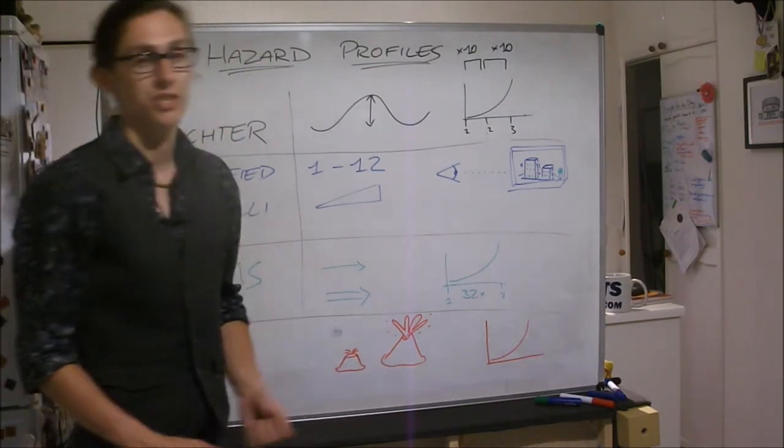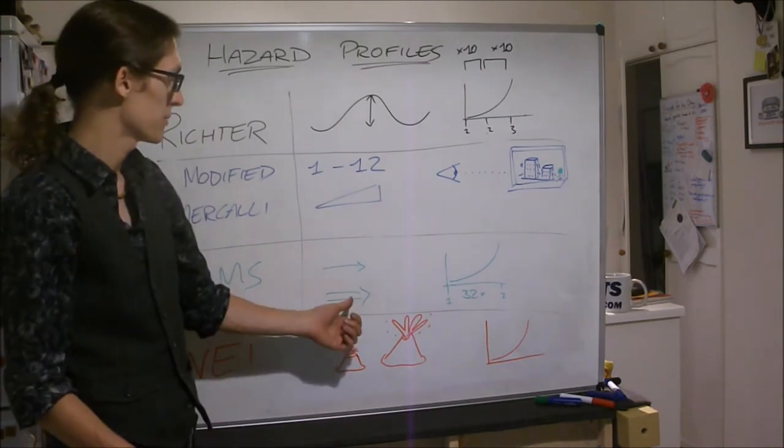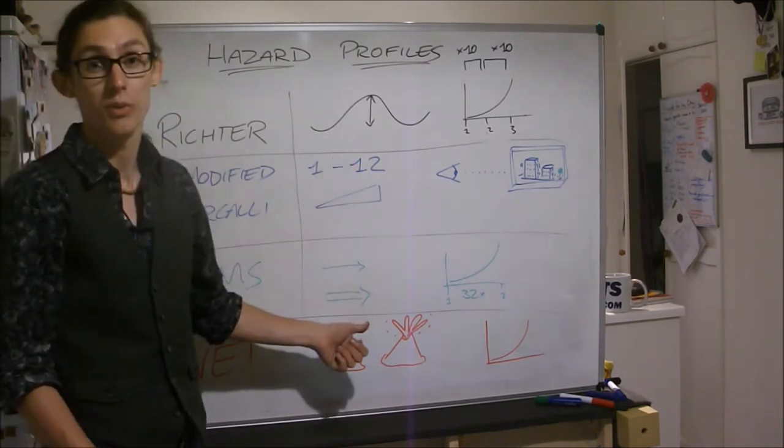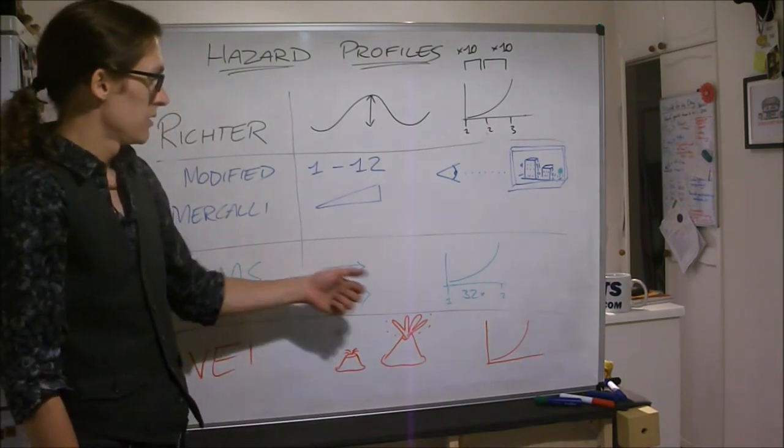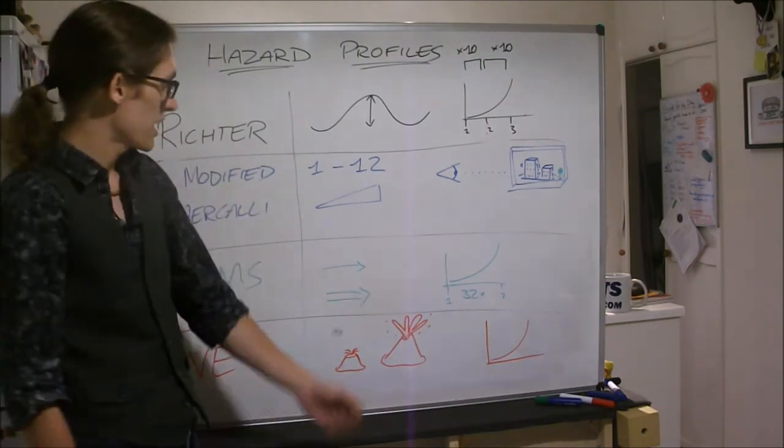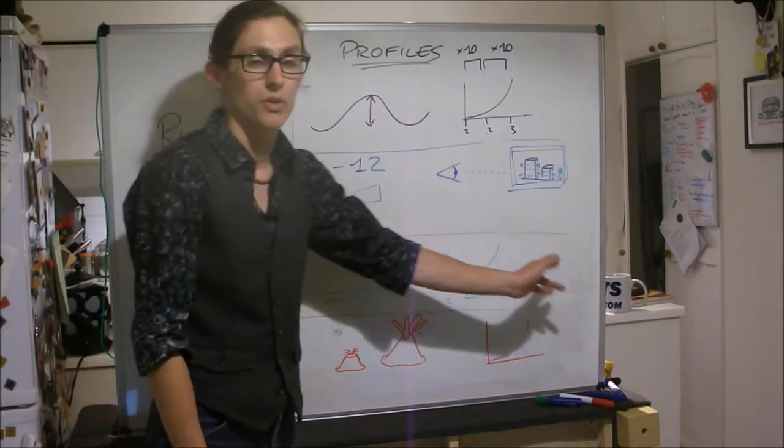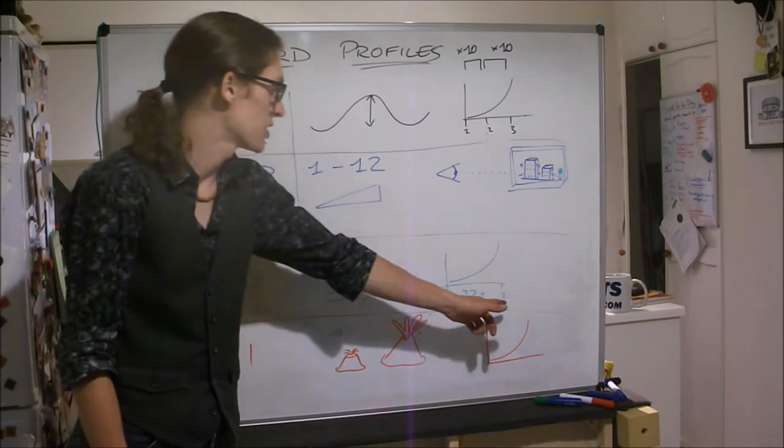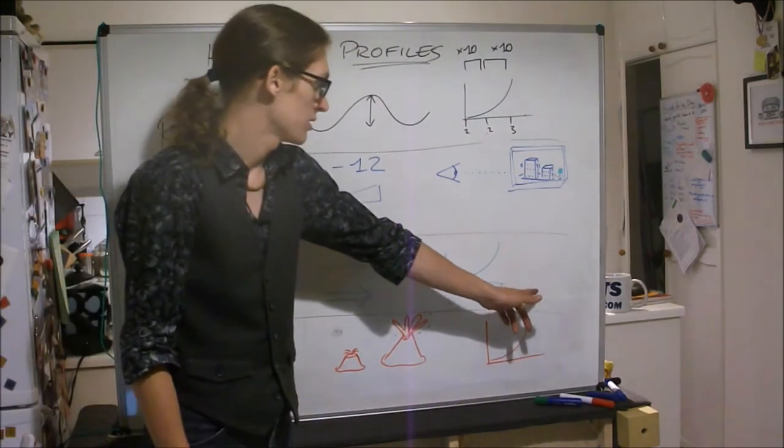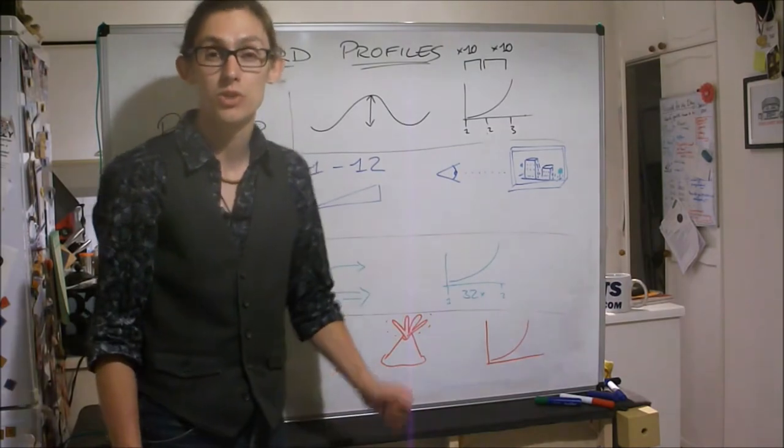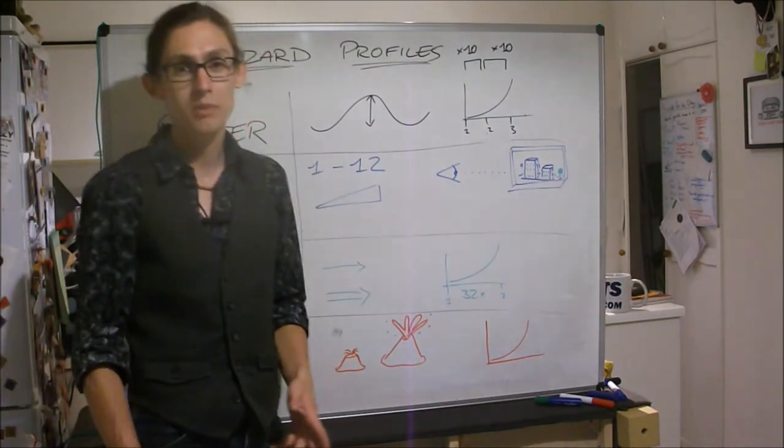The MMS moment magnitude scale measures energy. So moment is the energy that's being released by an earthquake. These three are all earthquake scales, by the way, just so you know. Again, it's a logarithmic scale, so you've got one, you've got two, you've got three. But actually two is thirty-two times more energy than one, three is thirty-two times more energy than two. So you're going up like that.